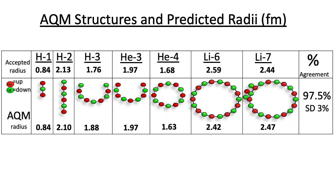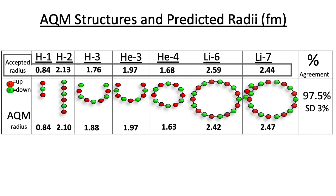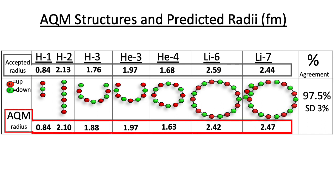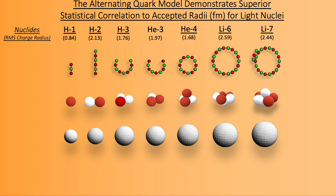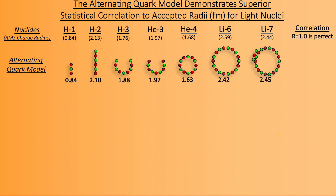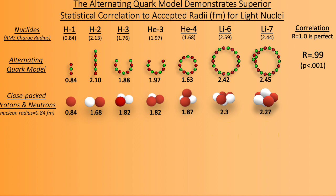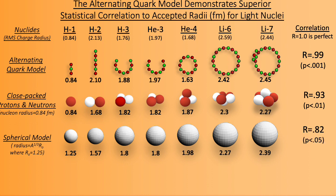Here are the alternating quark depictions of the nuclei of the first seven stable nuclides. The strength of the alternating quark model lies in its ability to predict these nuclear radii. The radius values currently accepted by the scientific community are shown within a gray box, while the radius values predicted by the geometry of simple alternating quarks are shown within a red box. These alternating quark radius predictions demonstrate 97% agreement with accepted values, within a standard deviation of less than 3%. On a scale where 1.0 represents perfect correlation, the alternating quark model rates a near-perfect 0.99. The most common depiction of the nucleus — with protons and neutrons as closely packed red and white spheres — correlates less strongly, and assuming the nucleus is always a sphere demonstrates the weakest correlation.